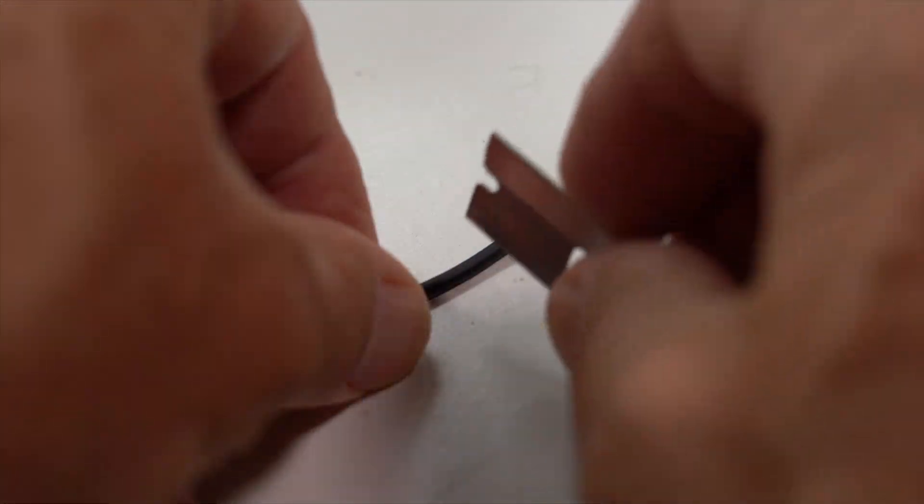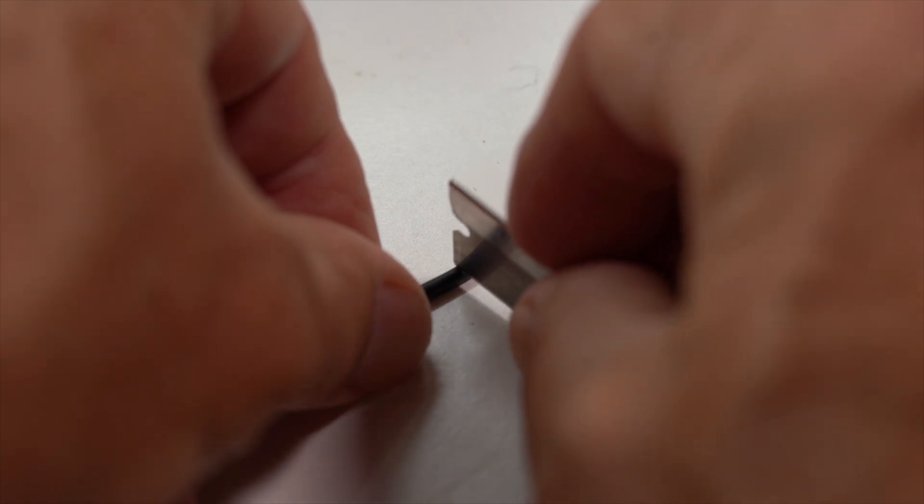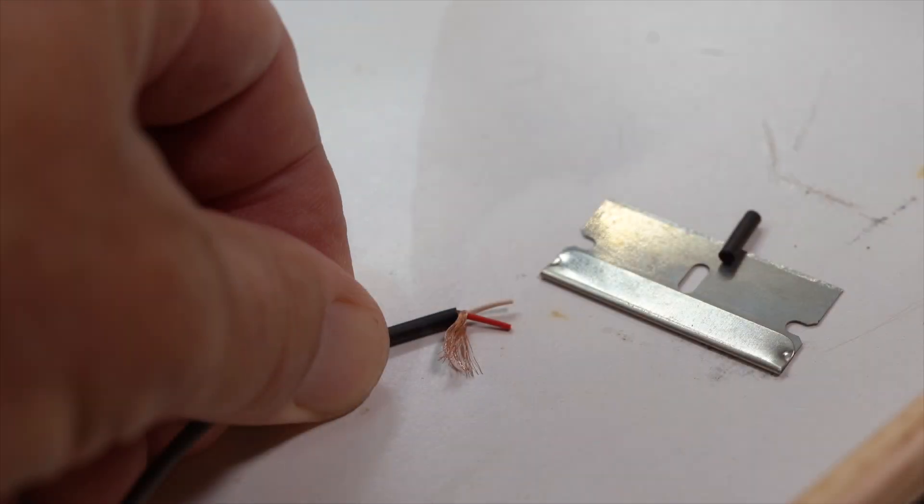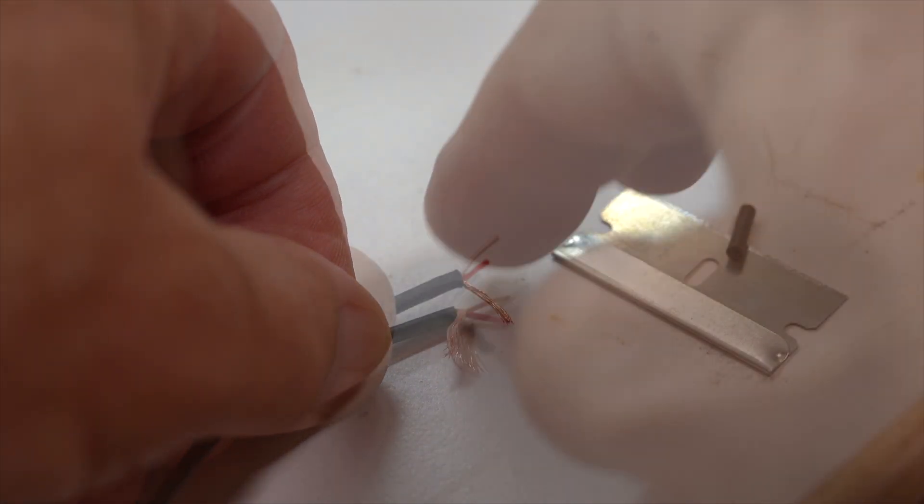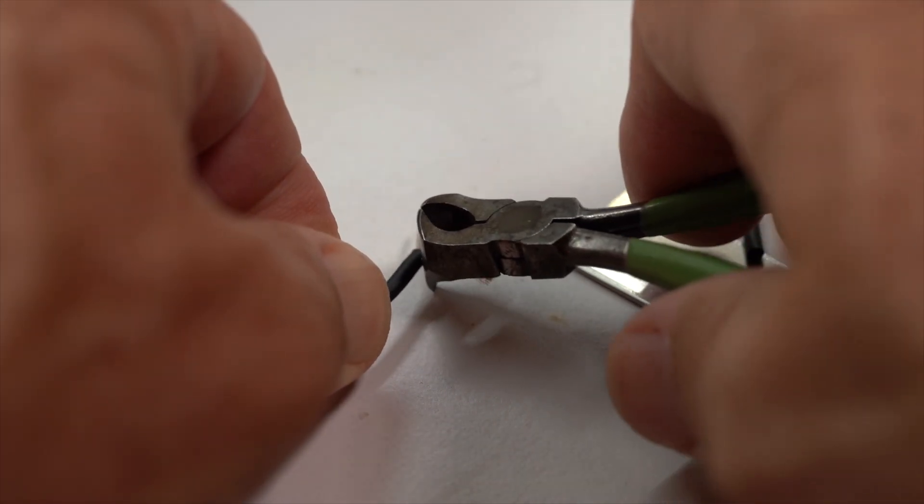The starting point is to prep the wire. I use a single-edge razor blade and carefully roll the wire to cut the outer jacket. Now pull the inner copper shield to one side and cut it back. We need about a quarter inch or so of exposed inner wire.